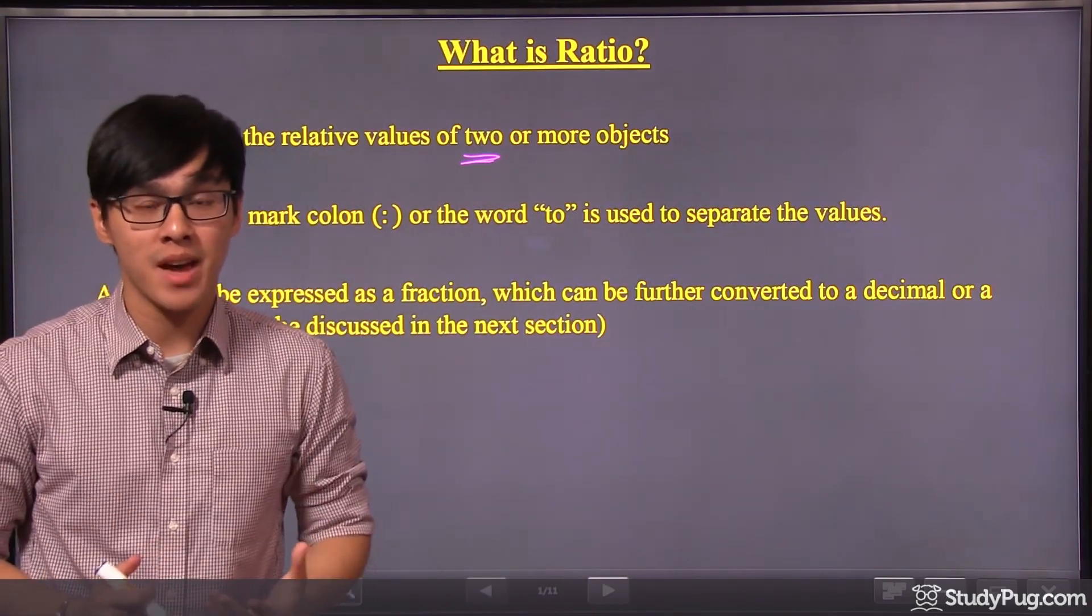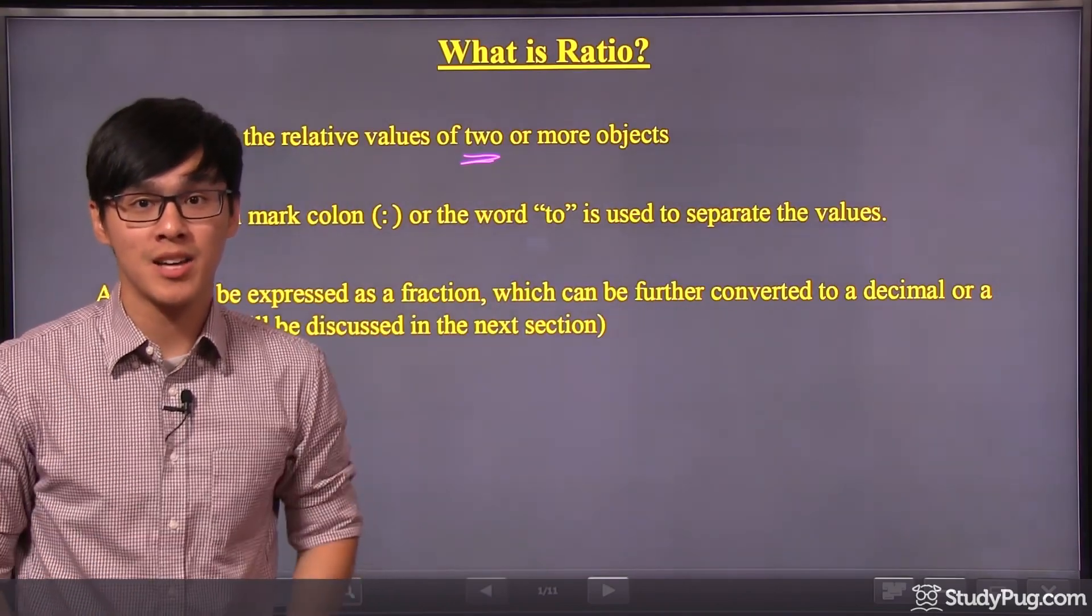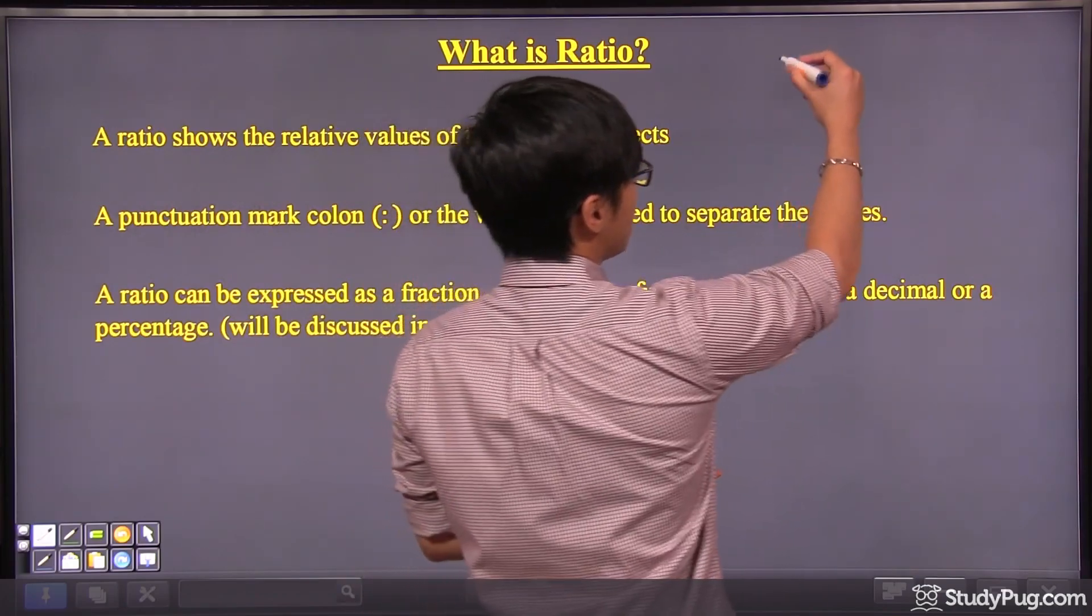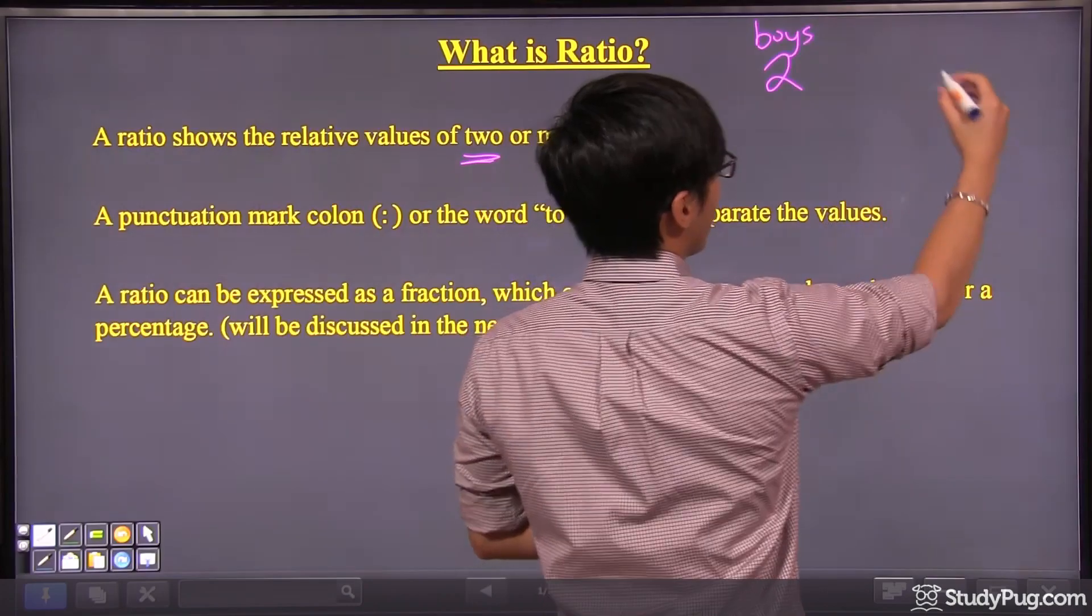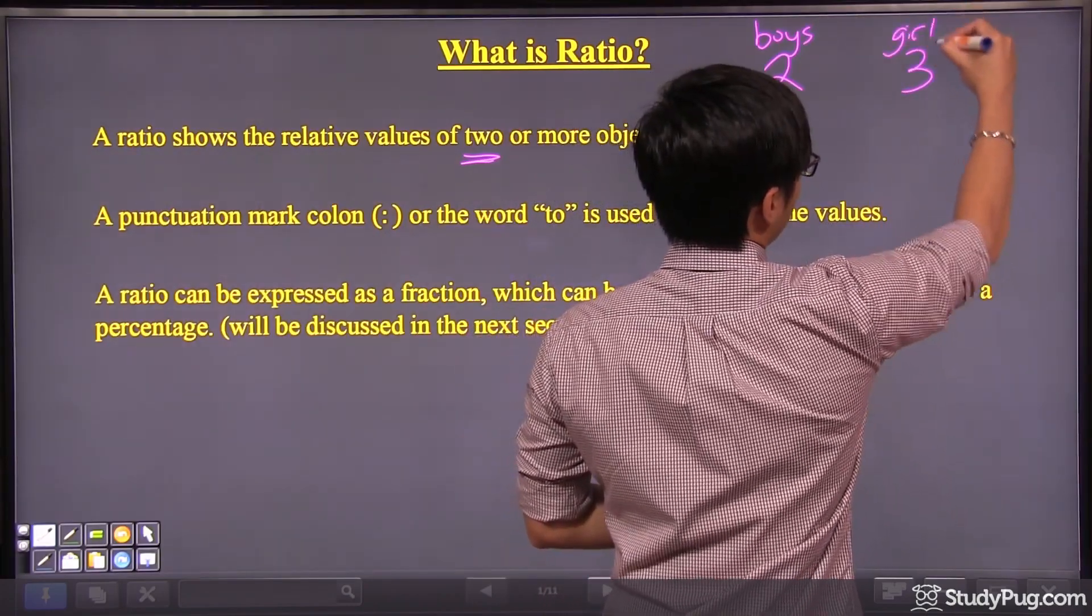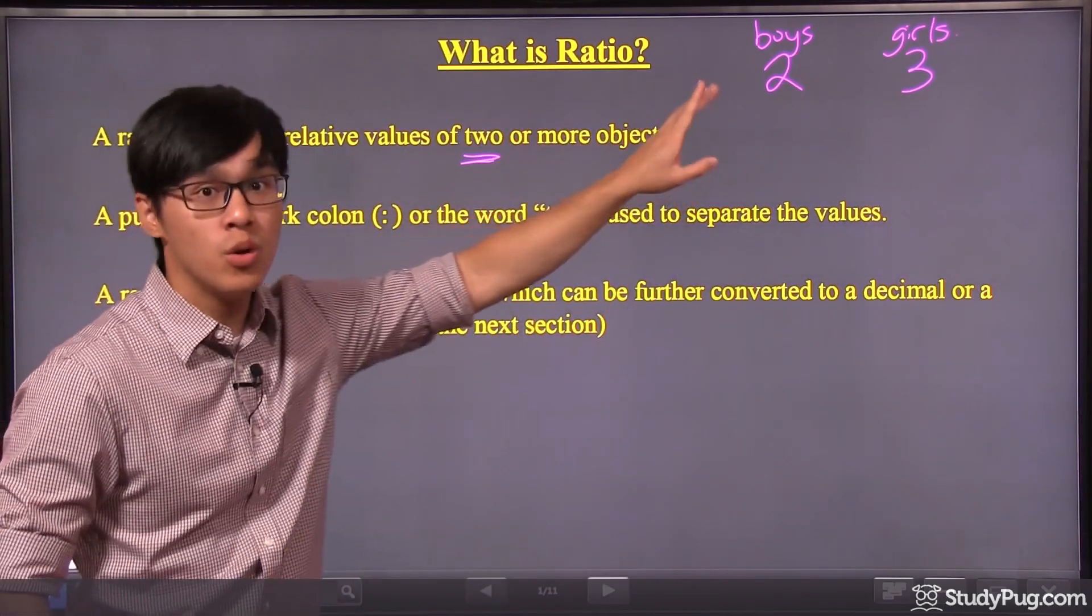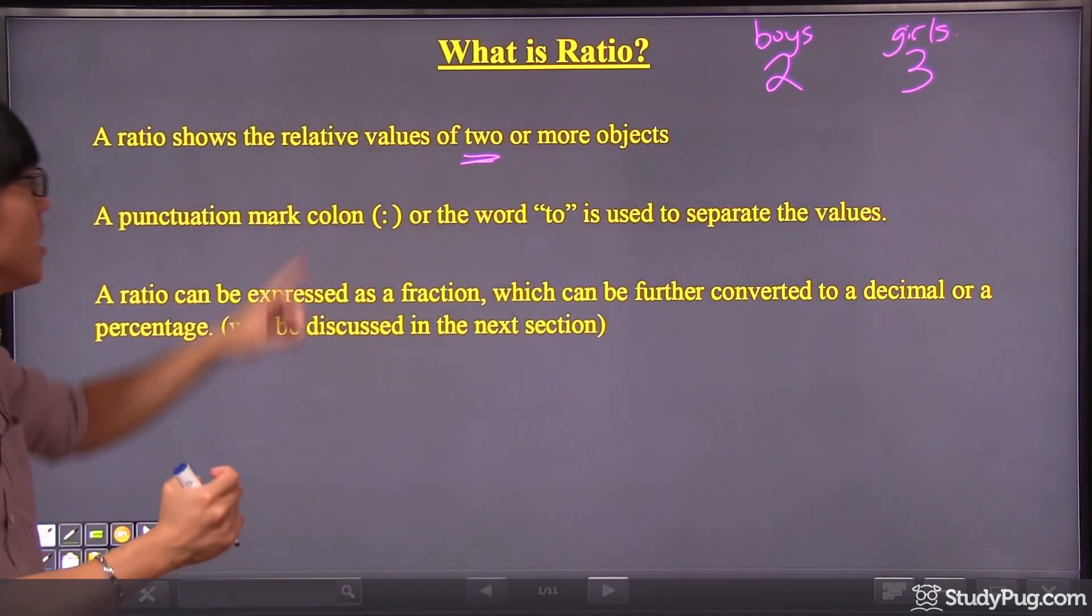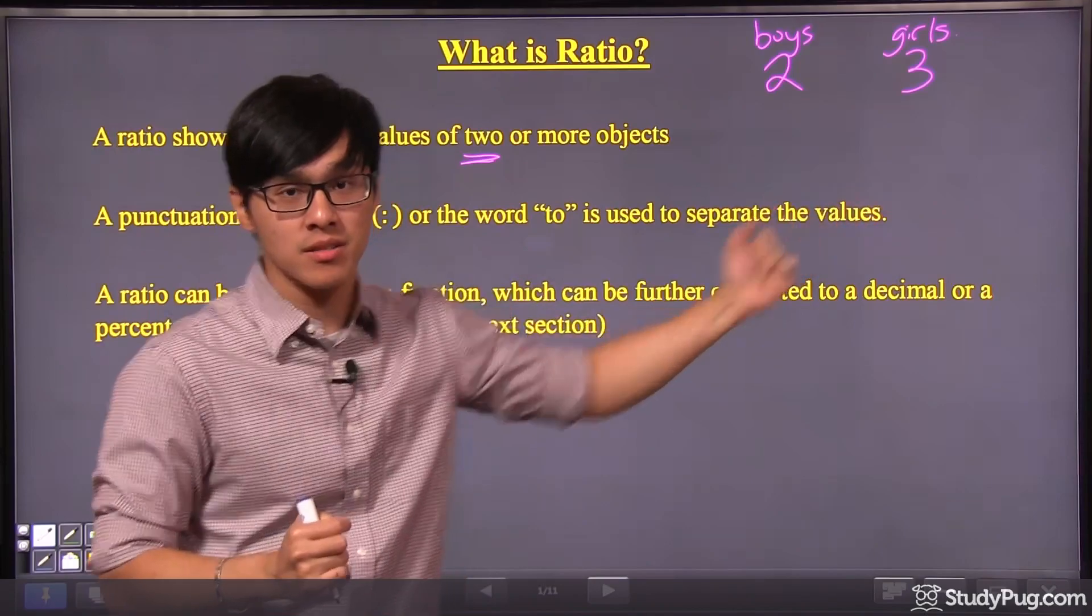A typical example in mathematics is the ratio of boys to girls in a classroom. For example, in a typical classroom, let's say every two boys, we have three girls. So the ratio is called two to three. That's what it means by ratio. We're comparing the relative values of two or more objects.